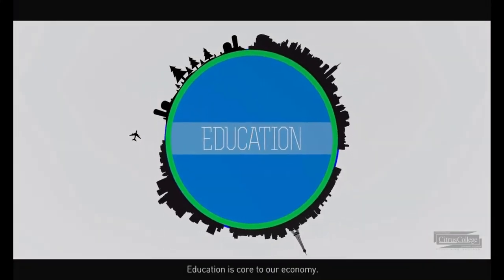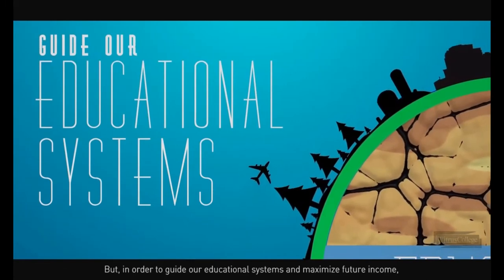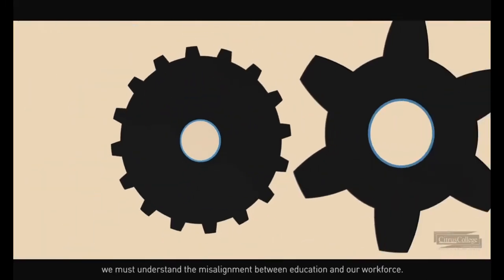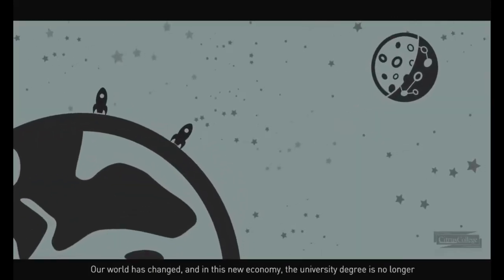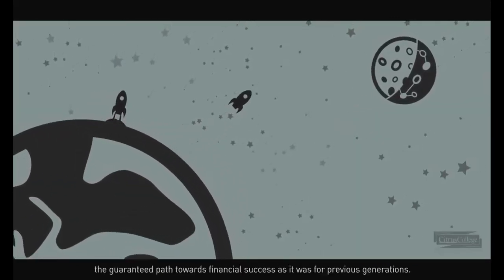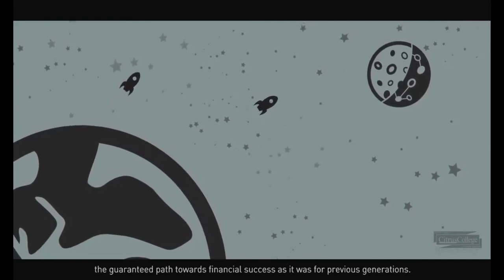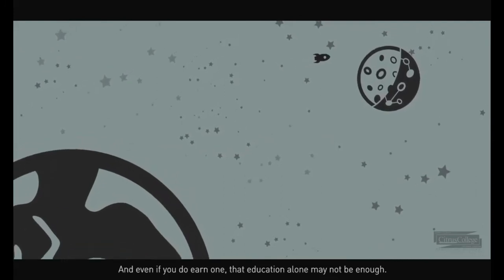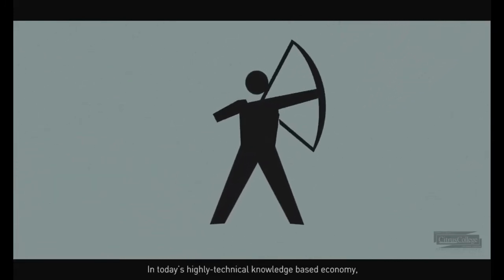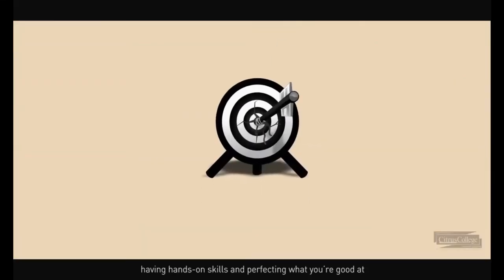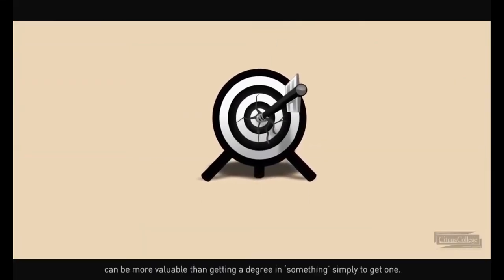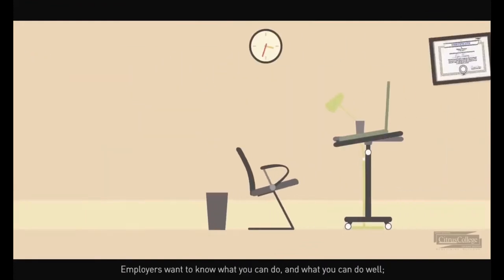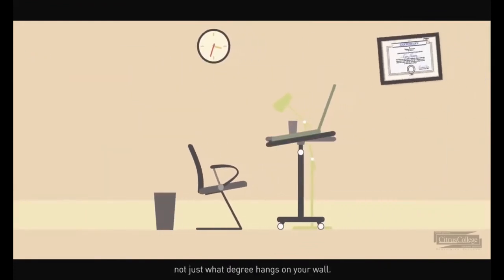Education is core to our economy, but in order to guide our educational systems and maximize future income, we must understand the misalignment between education and the work market. The university degree is no longer the guaranteed path towards financial success as it was for previous generations, and even if you do earn one, that education alone may not be enough. In today's highly technical, knowledge-based economy, having hands-on skills and perfecting what you're good at can be more valuable than getting a degree simply to get one. Employers want to know what you can do and what you can do well, not just what degree hangs on your wall.